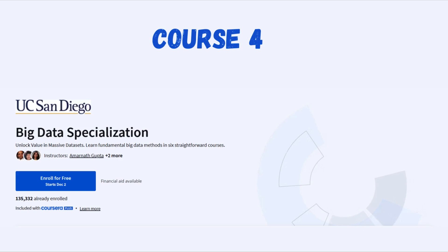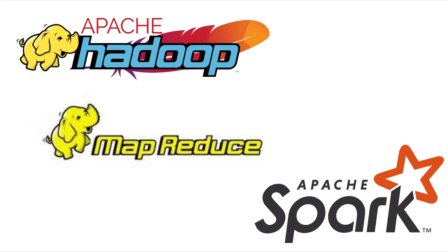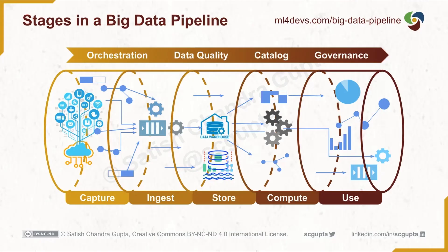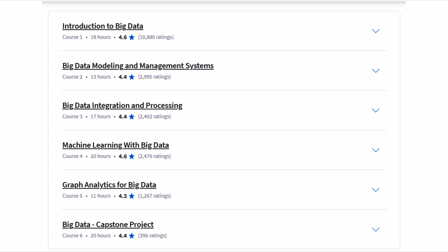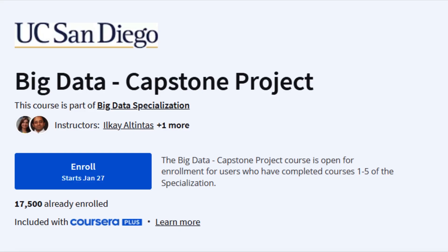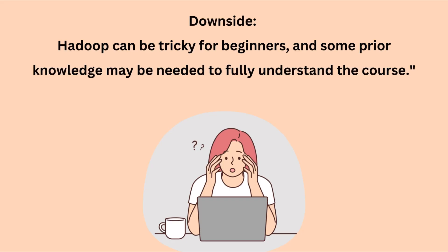For anyone looking to really get into big data and Hadoop, Coursera offers the Big Data Specialization by UC San Diego. This is an amazing course if you want to understand how massive amounts of data are handled. You will learn about Hadoop, MapReduce, Spark, and how to build data pipelines for big data applications. A major advantage is that it's broken down into manageable sections, making complex topics like Hadoop more understandable. The hands-on final project is also a huge pro.